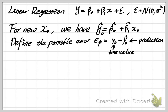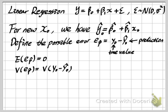Because we already assumed the error term has mean 0 and variance σ² from a normal distribution, we can derive the properties of ê_p directly. First, ê_p still follows a normal distribution, and its mean is also equal to 0. The variance, by definition, equals the variance of the difference between y₀ and ŷ₀, which by the properties of variance equals the variance of y₀ plus the variance of ŷ₀.